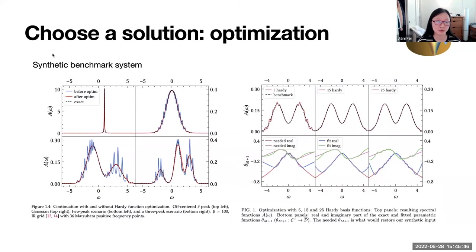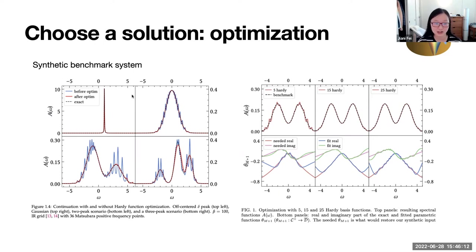Here are some preliminary results on a synthetic benchmark system. We construct spectral functions consisting of delta peaks or various Gaussian peaks, perform a back-continuation to the Matsubara axis, and sample there. We take those Matsubara Green's function samples as input for Nevanlinna analytic continuation. This gives the blue lines; after Hardy optimization, we get the red lines. The dashed lines are the exact spectral functions. The optimized and exact curves collapse onto each other, showing a small triumph of our method.